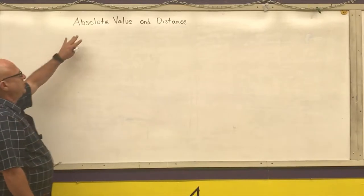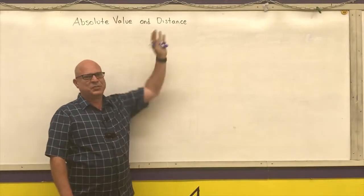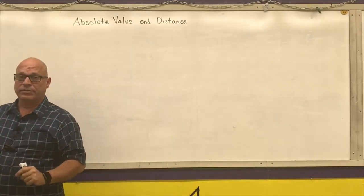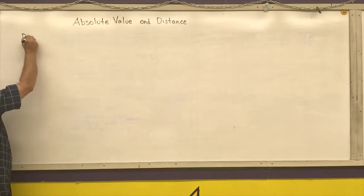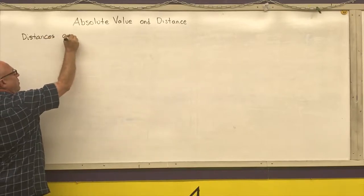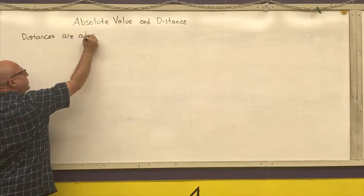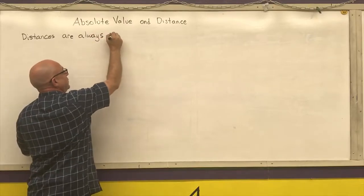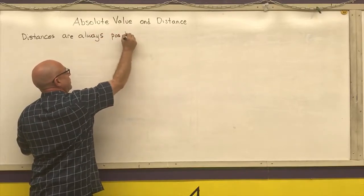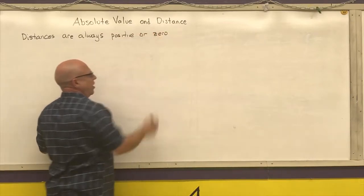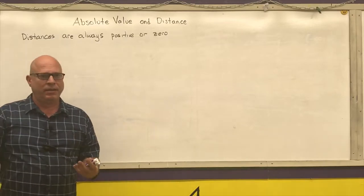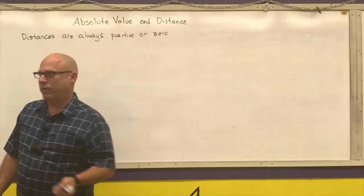We're going to talk about absolute values and distances between numbers on number lines. Before we do the major work here, I want to state that distances are always positive or zero. How far I am away from something will never be a negative number.